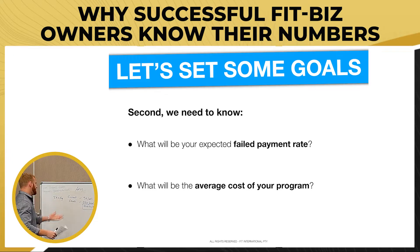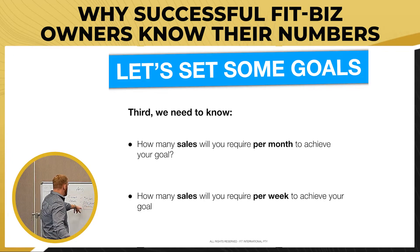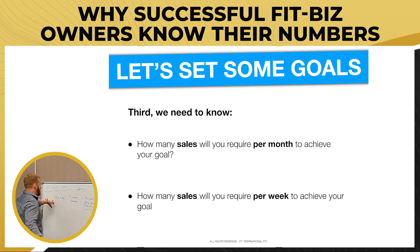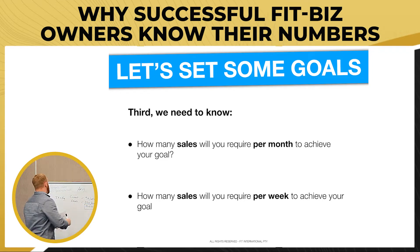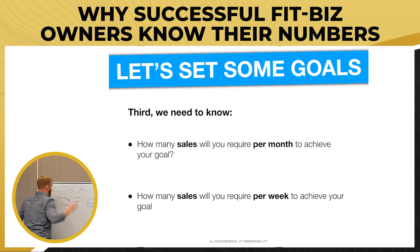So now what we're going to do — simple math — let's say 24K per month is the goal. We've got $2K, so what we're going to need is 12 sales per month. That's our first target: 12 sales per month. Is everyone with me so far? Anyone confused?